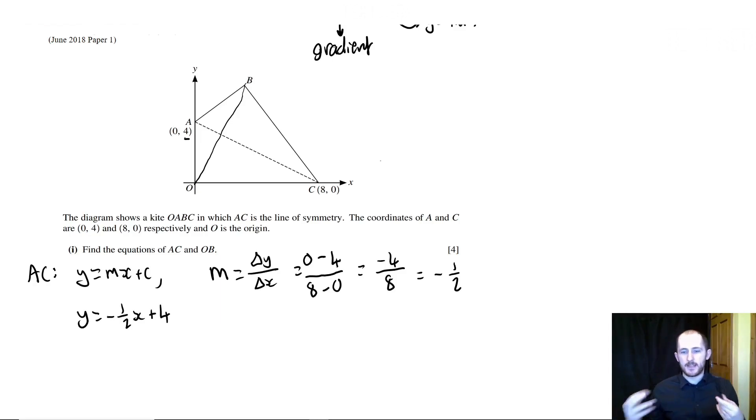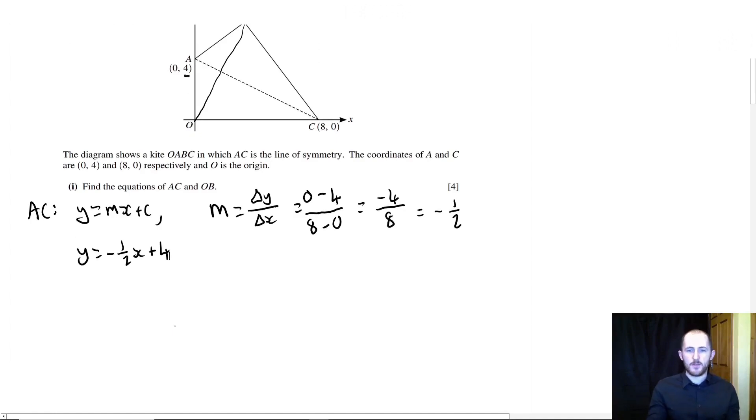So the equation for AC is y equals minus a half x plus 4. Keep in mind that since I had the gradient, I could have subbed in one of the coordinates to work out what the y-intercept was, if I didn't already have it.